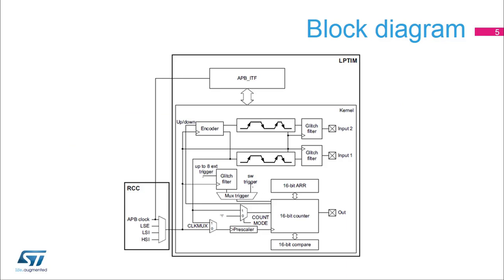The Low Power Timer is a peripheral with two clock domains. The APB clock domain contains the peripheral's APB interface. The Kernel clock domain can be clocked by the APB clock source or by other internal clock sources, including the LSE, LSI, and HSI sources. Also, the Kernel clock domain can be clocked from an external clock source through the timer's Input-1 input.